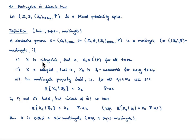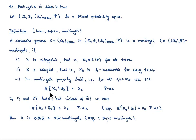First of all, our stochastic process should be integrable, meaning that for each time point t in our index set, x_t is in L1. Second, our stochastic process should be adapted, meaning that x_t is f_t-measurable for every t. And now comes the most important property, the so-called martingale property. For that you fix two time points s and t in your index set with the property that s is strictly less than t.